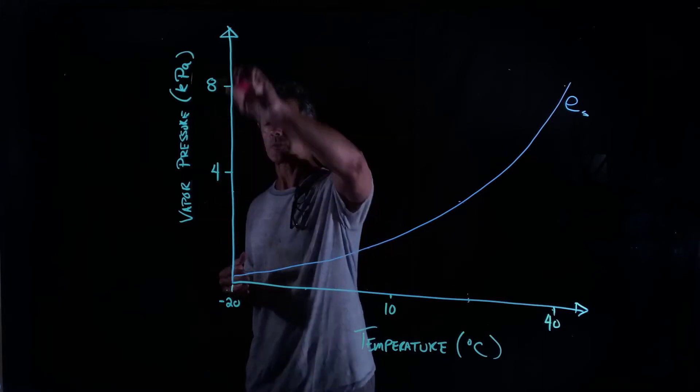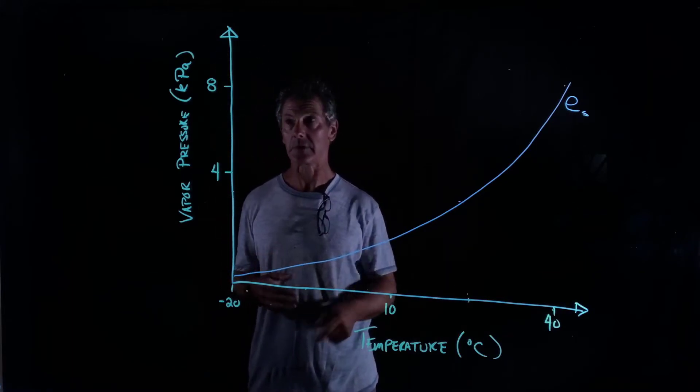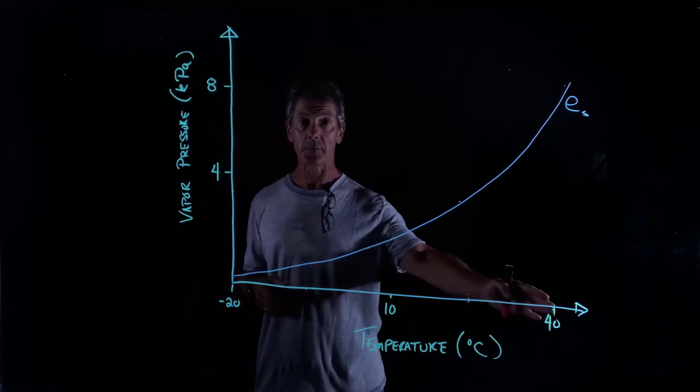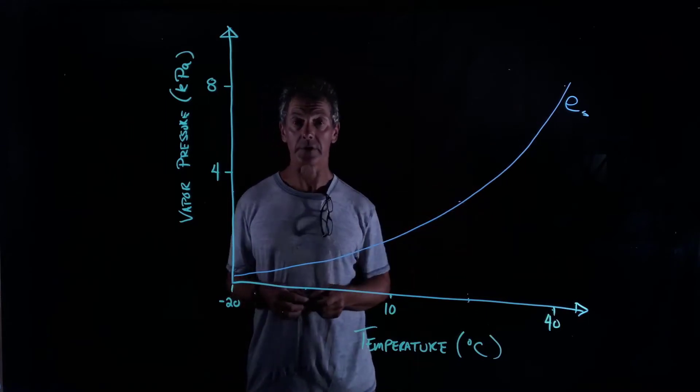So we're plotting vapor pressure, which is the partial pressure of water in the atmosphere, in kilopascals, versus temperature. The higher the temperature, the more water you can keep in the air.